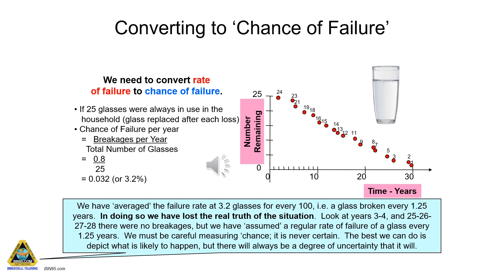We must be careful measuring chance — it is never certain. The best we can do is depict what is likely to happen, but there will always be a degree of uncertainty. To calculate the probability of a glass failing we need to know the total number of glasses in use. Probability of failure equals the number failing in a time period divided by the total number at risk. We have developed an average measure for when failures occur, but it is not the same as predicting the real failure. A little later in the course, we will use the averaged rate of failure to predict how much time is left before a part fails, but it will only ever be an estimate.